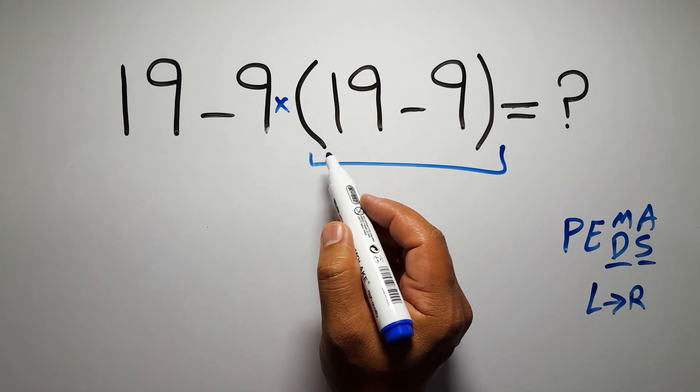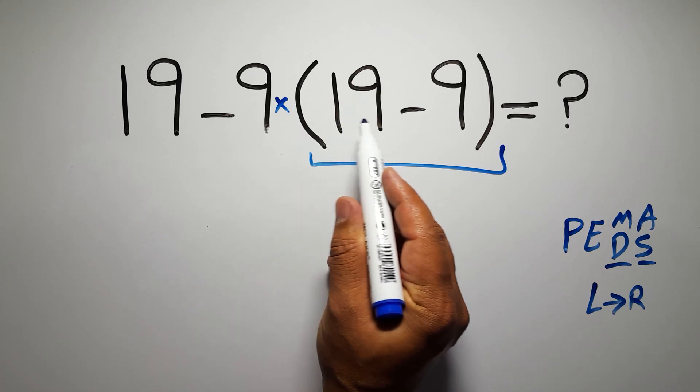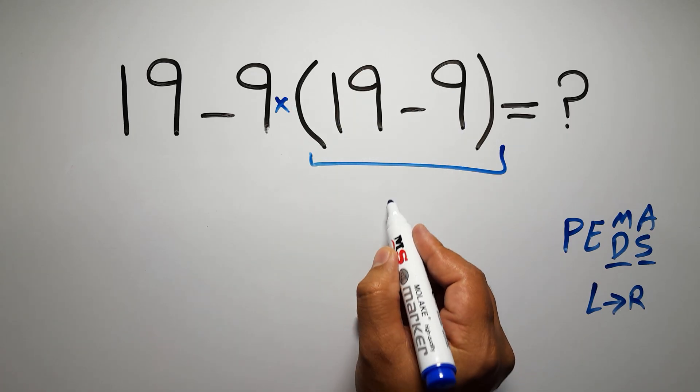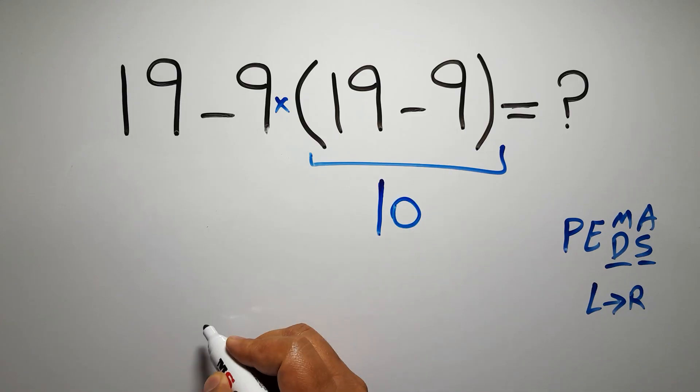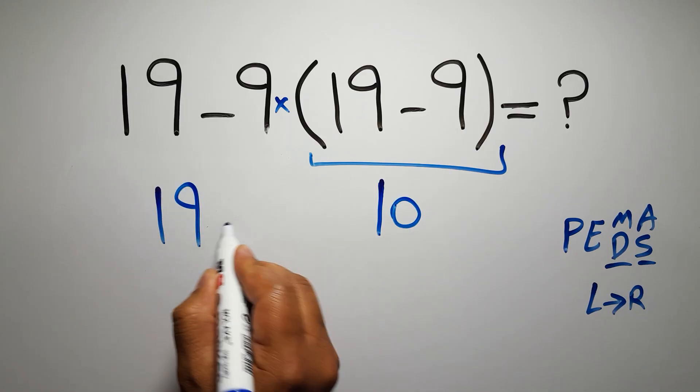So first these parentheses. Inside these parentheses we have 19 minus 9, which gives us 10. So 19 minus 9 times 10.